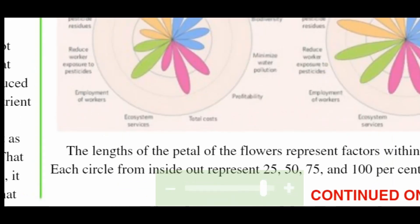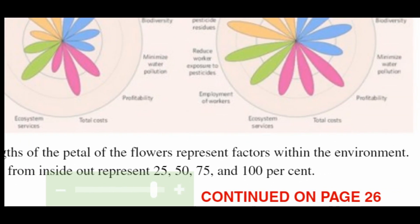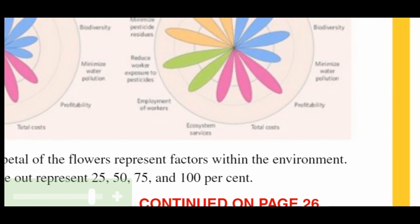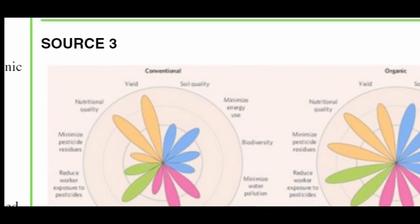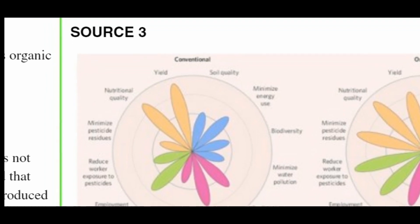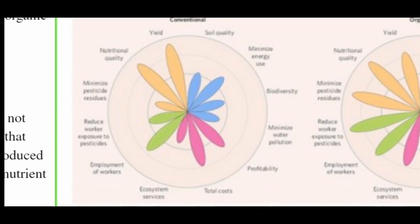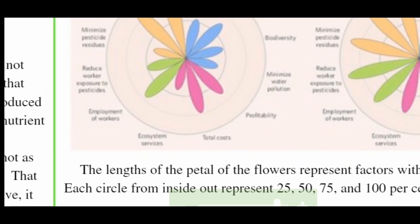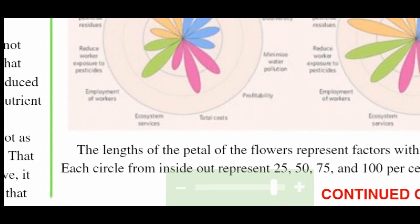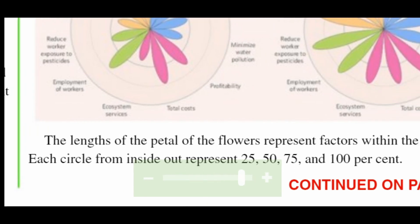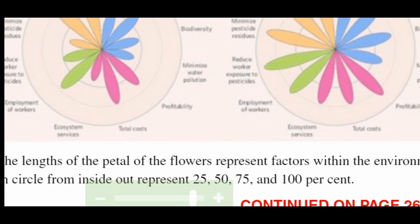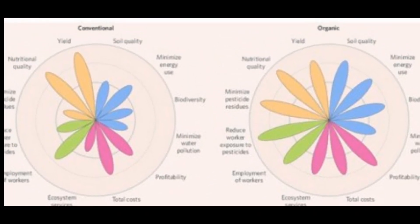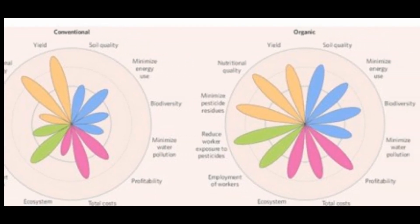Source 3 shows a chart where the length of the petals of the flowers represent factors within the environment. Each circle from inside out represents 25, 50, 75, and 100 percent. Looking at the conventional farming data: yield is high, nutritional quality is also high, but minimizing pesticide residues is low. Reducing worker exposure to pesticides is also low. Employment of workers is high. Ecosystem services are low. Profitability is good. Minimizing water pollution is low, and biodiversity is low.